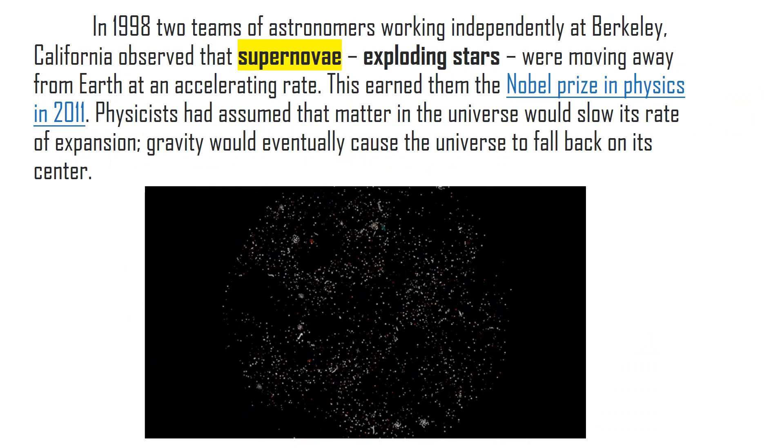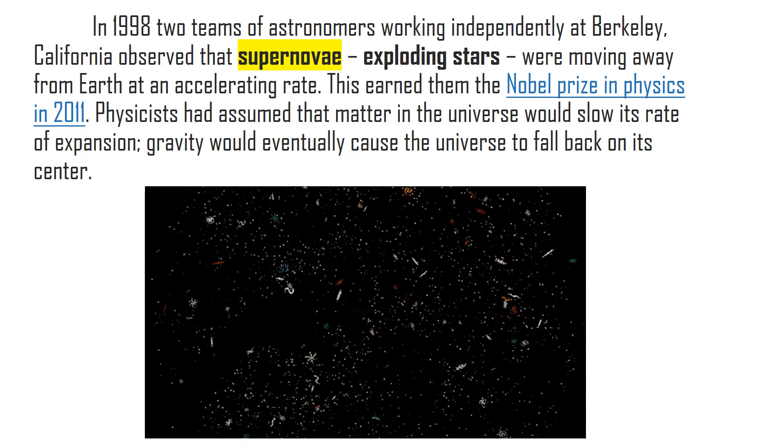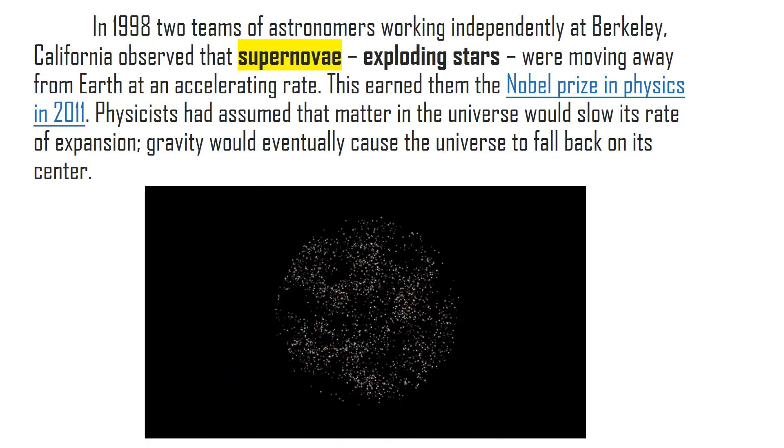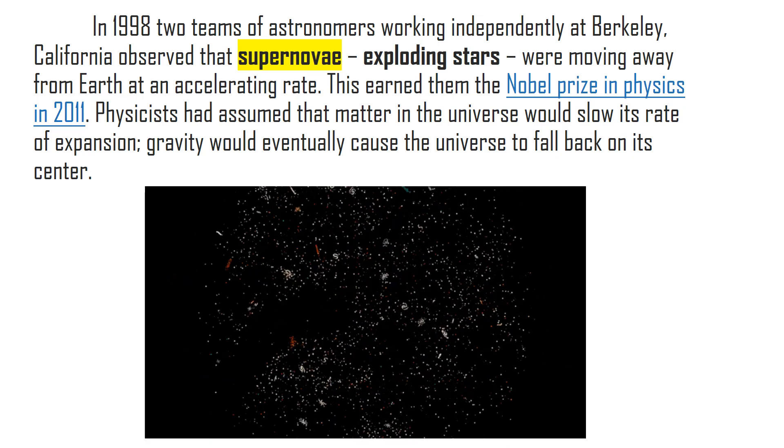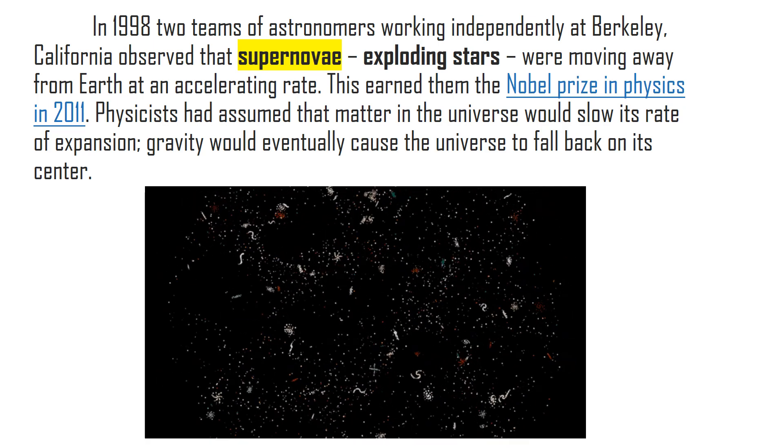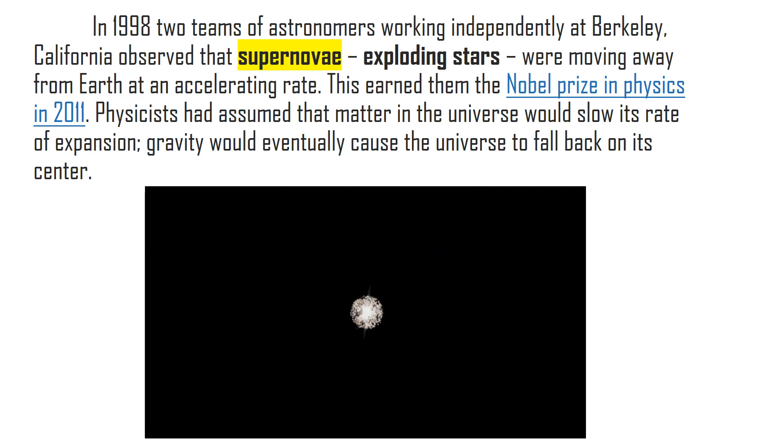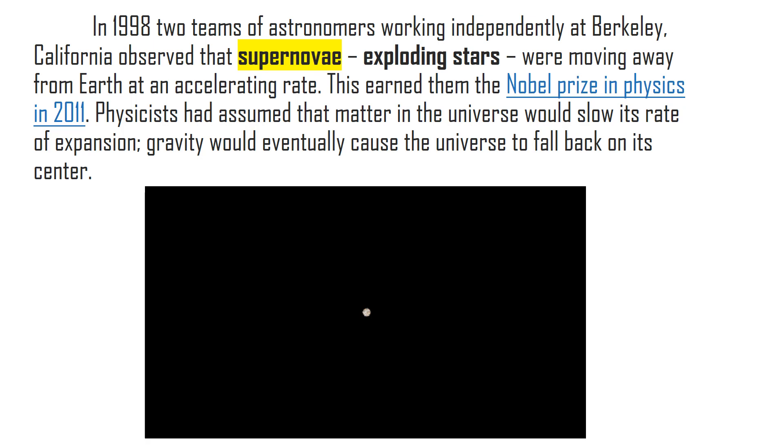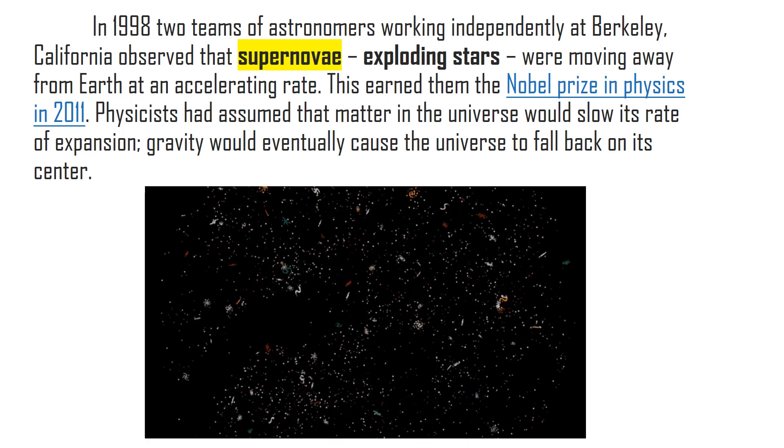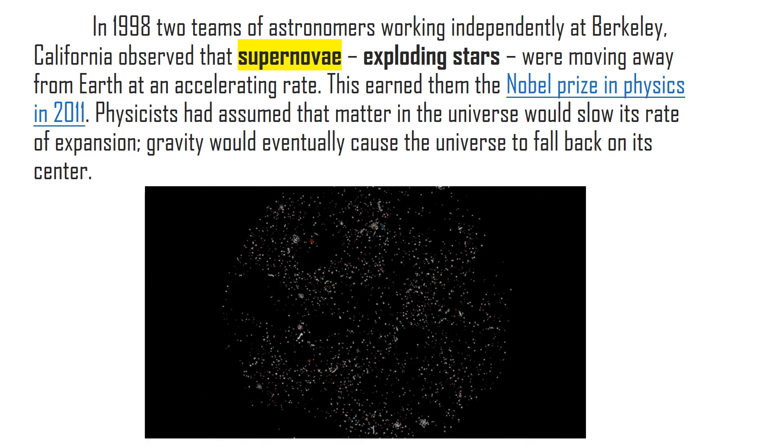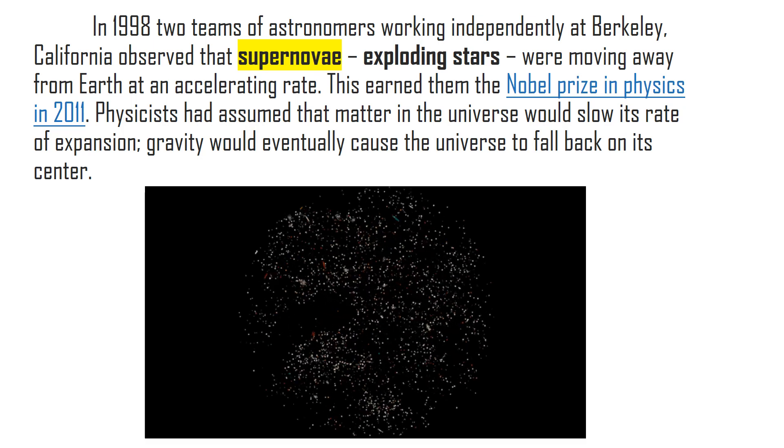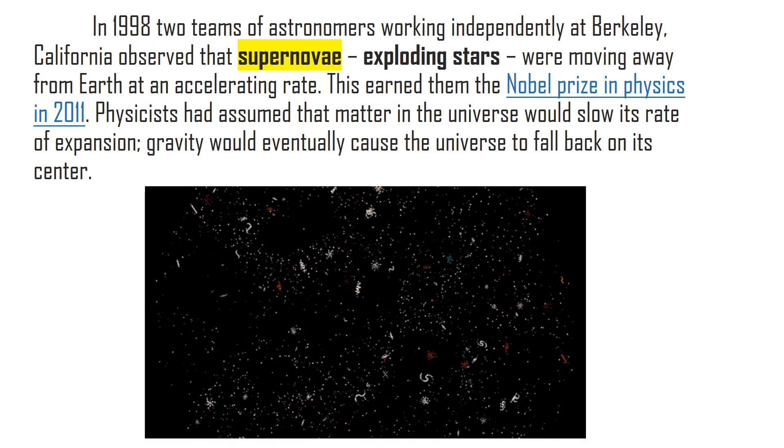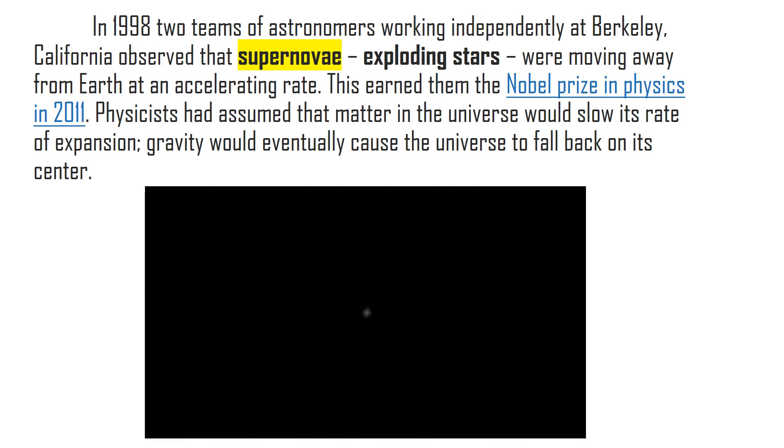In the year 1998, two teams of astronomers from Berkeley, California, observed that supernovae or exploding stars were moving away from Earth at an accelerating rate. This earned them the Nobel Prize in Physics the year 2011. They also had assumed that matter in the universe would slow its rate of expansion due to what we call gravity, because this gravity would eventually cause the universe to fall back on its center.